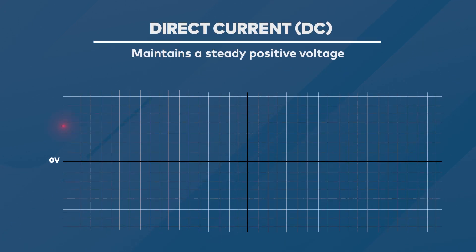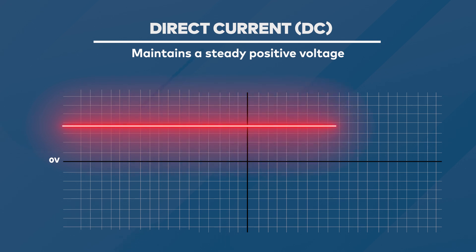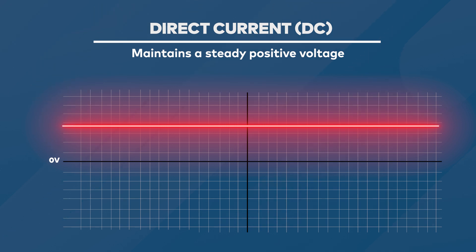Electricity is produced in two basic methods, which can be more easily seen when viewed in graph form. Direct current, the most basic, provides a steady amount of voltage. Measuring direct voltage is easy since you only have to determine the amount of voltage between the zero line and the positive value.